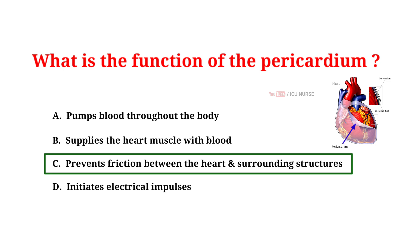The pericardium serves several important functions. It protects the heart by acting as a barrier against infections and other potential threats. It also reduces friction between the heart and surrounding tissues by producing lubricating fluid. Additionally, it helps anchor the heart in the chest and limits its movement, ensuring it stays in the correct position.